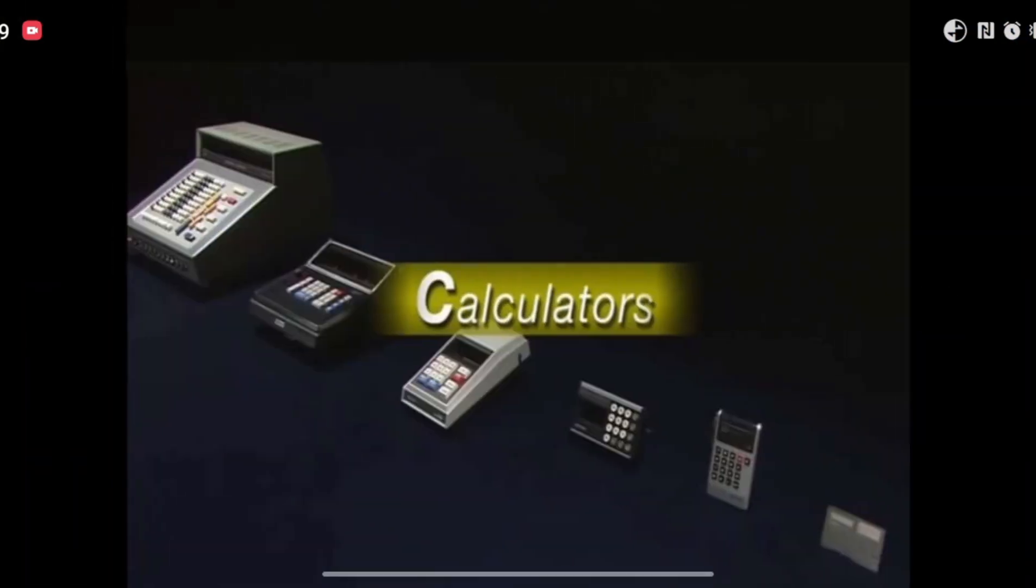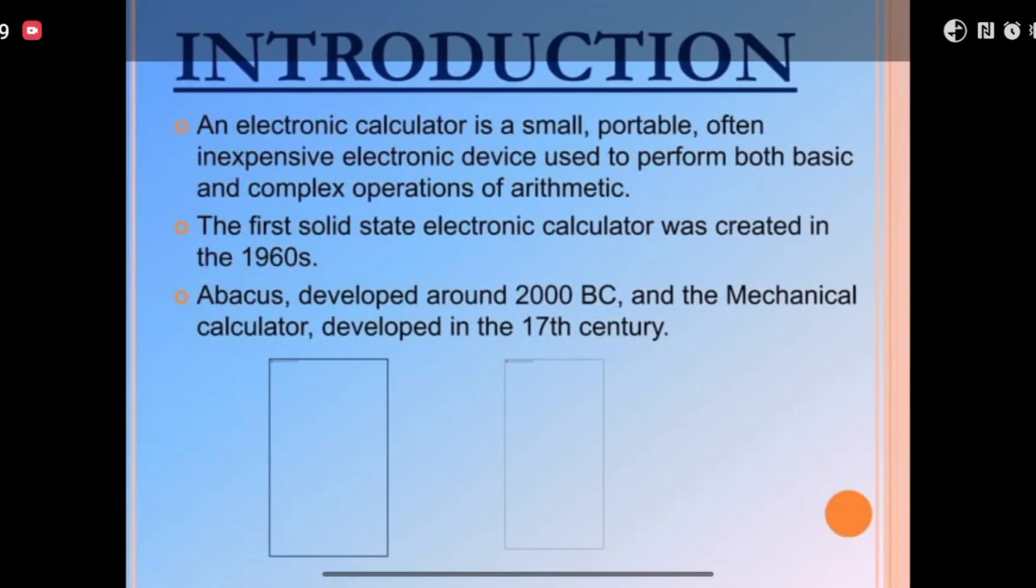As you can see in this picture, different types of calculators are defined. An electronic calculator is a small, portable, and inexpensive electronic device used to perform both basic and complex operations of arithmetic.